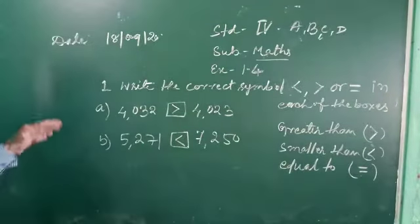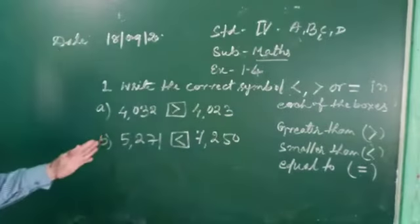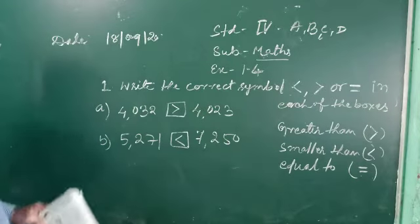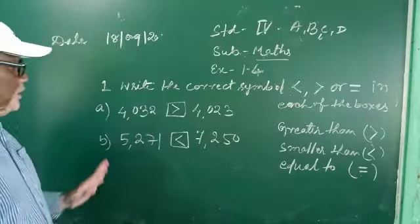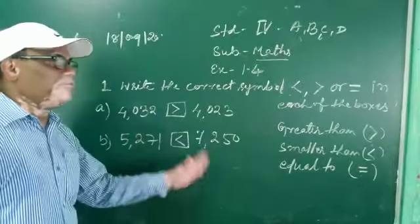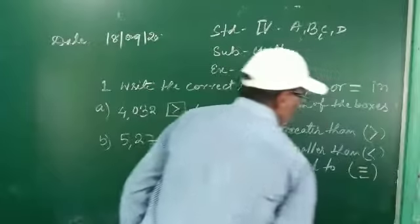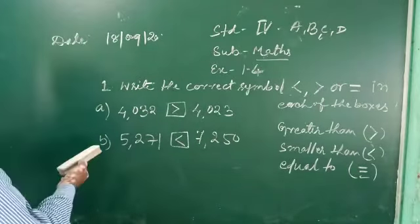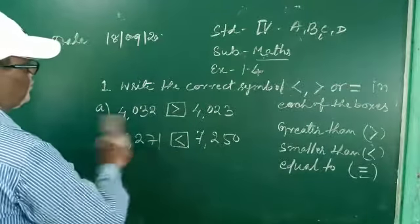Understanding: if the first number is smaller, then you use the smaller than sign. If the first number is greater, then you put the greater than sign. Otherwise, if both numbers are equal — suppose the first number and the second number are both equal — you put the equal to sign. Next, I am going to the second portion; you try the others according to this portion.